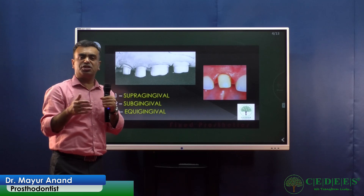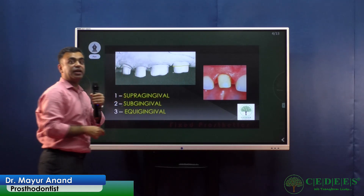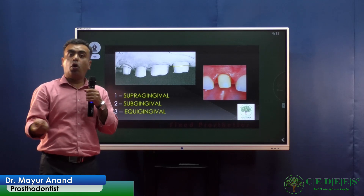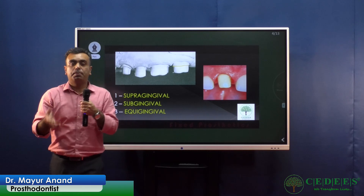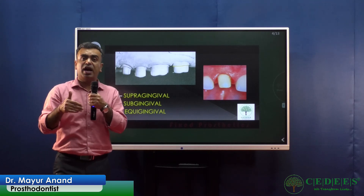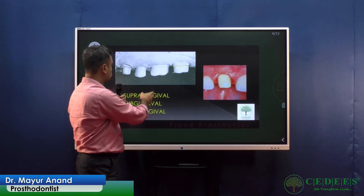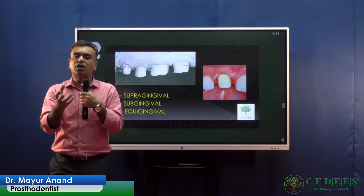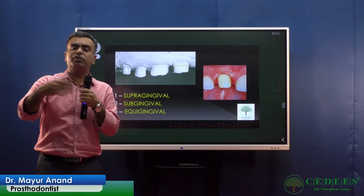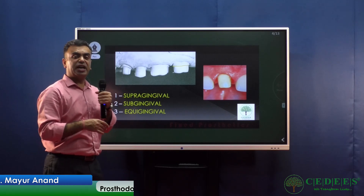A supra-gingival finish line, as the name suggests, is above the gingiva. It is best for hygiene maintenance, best for inspection by the doctor or by the patient, because it is located on the tooth surface and not covered by the gingiva. However, when you place a crown on a supra-gingival finish line, it may appear as if part of the tooth is not covered, so the shade must match well or it should be outside the aesthetic zone.